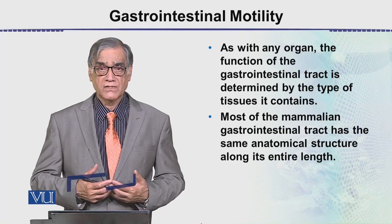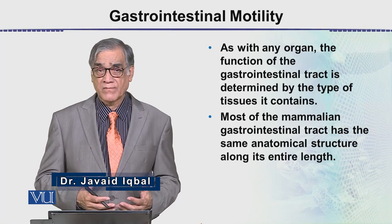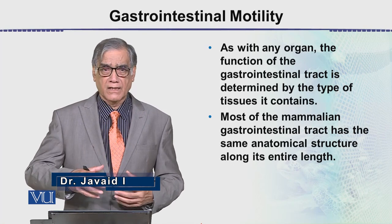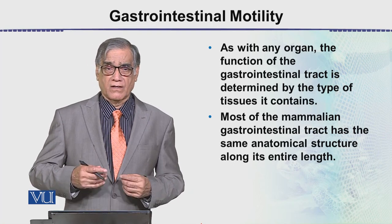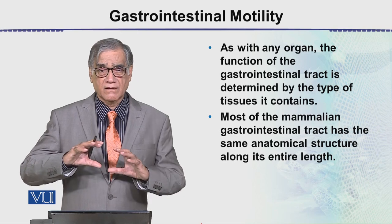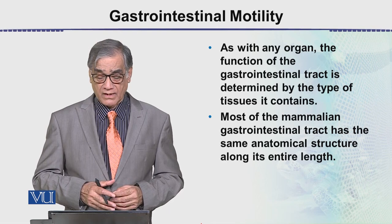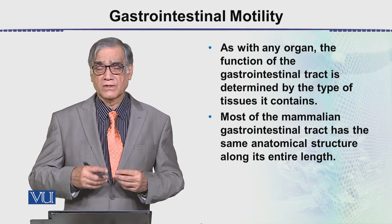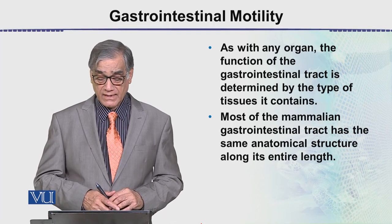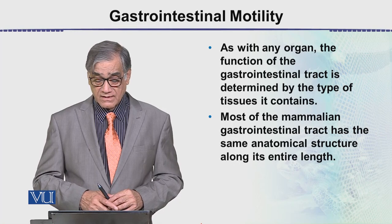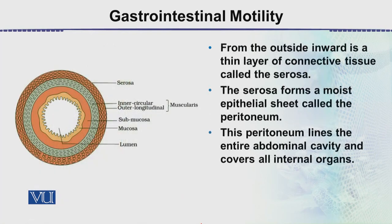Because there are muscles in it, there are different types of layers in the GI tract. Right from mouth to anus, this is one of those intestinal tissues. In these movements, food will move along the intestine. Most of the mammalian gastrointestinal tract has the same anatomical structure along its entire length.